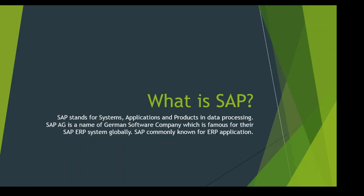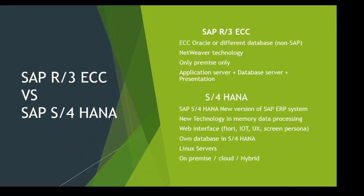SAP is the name of an ERP application and also the name of a company — it's a German-based company. We are discussing two ERP software versions: one called SAP R3/ECC, and one called SAP S/4HANA. R3 is the previous version and S/4HANA is the latest version.